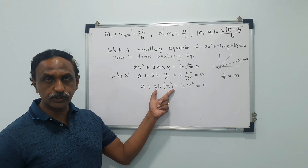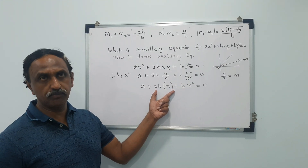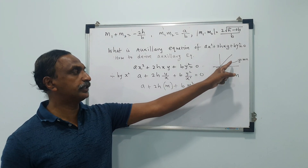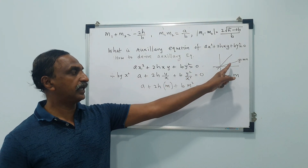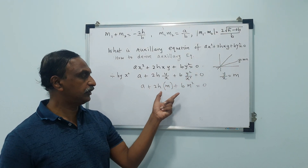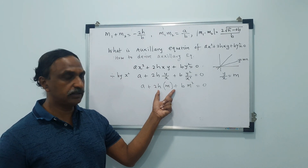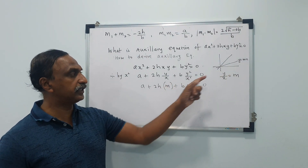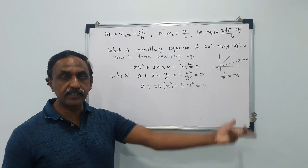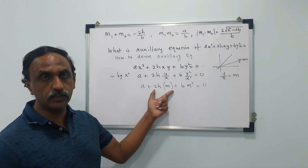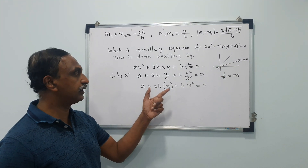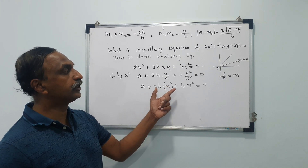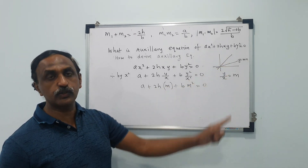Every quadratic equation has two roots, maybe equal or unequal. So if the lines are coincident, you will get equal roots. If the lines are distinct, you will get two separate unequal roots, and you will get imaginary roots if the lines are imaginary. This is called the auxiliary equation, and its use is to calculate the slope of the lines.